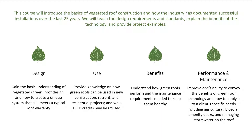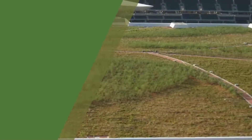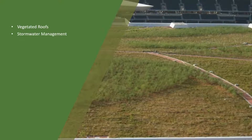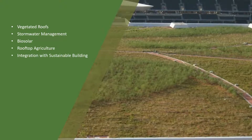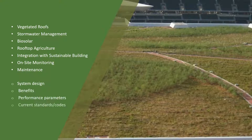We consider vegetated roofs on a holistic level, consistently thinking of the impacts for the designer, the owner, the environment, and the budget. This presentation is designed to reflect these holistic points of view. Today's categories include vegetated roofs, stormwater management, biosolar, rooftop agriculture, sustainable building integration, monitoring, and maintenance. Within these categories, we'll be discussing design, benefits, performance parameters, standards, and project ideas.